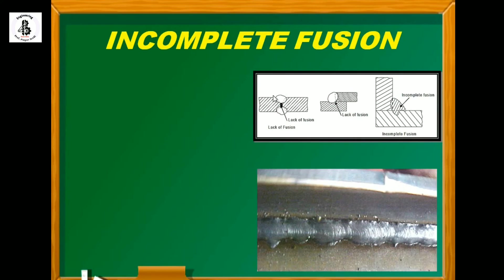Next is incomplete fusion, also called lack of fusion. For a butt joint, if welding is performed improperly it is considered an imperfect weld — known as lack of fusion. For lap joints, improper welding creates an imperfect joint. For fillet welds, incomplete fusion also occurs, which can generate distortion. This is shown in an actual picture of incomplete fusion in the weld zone.